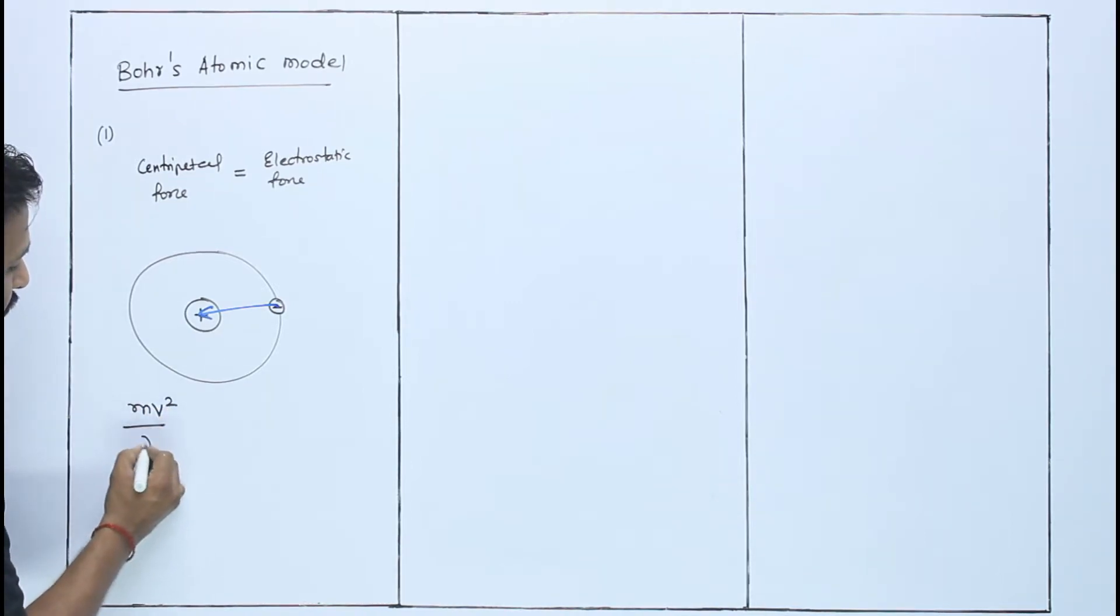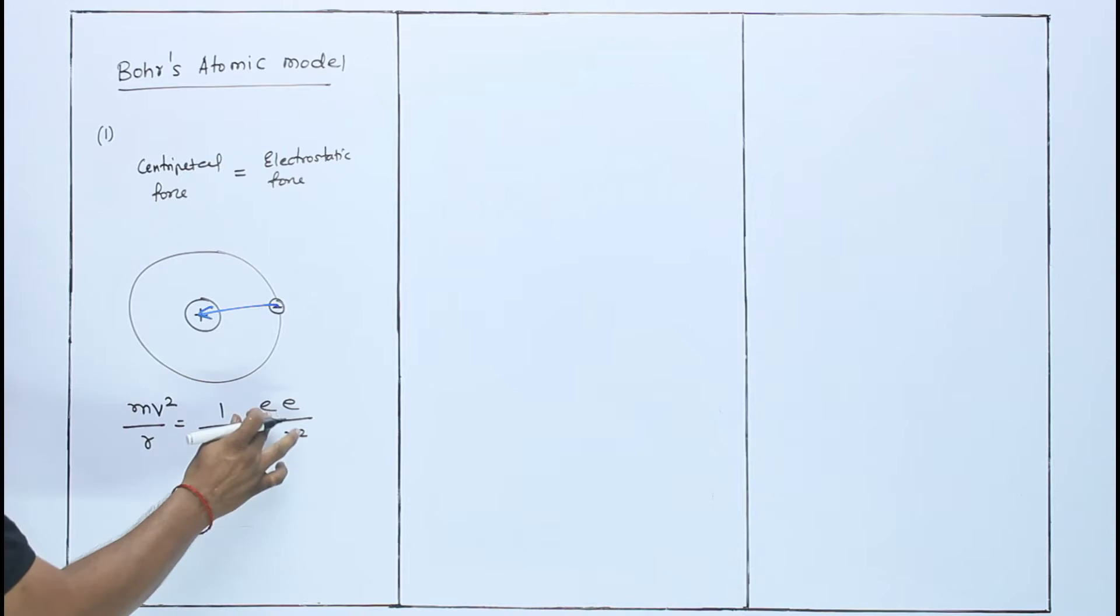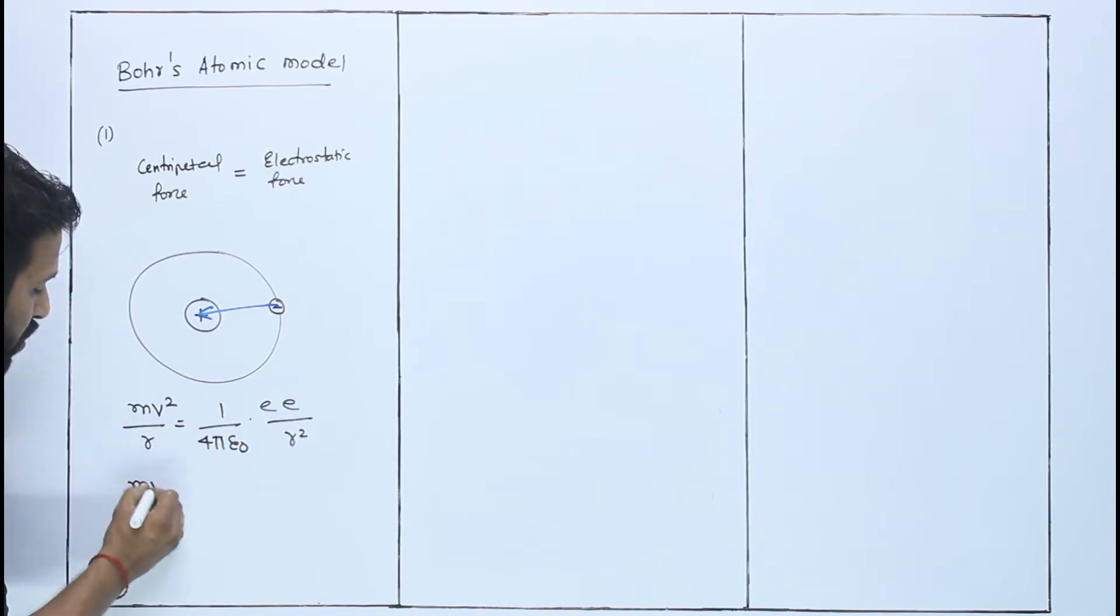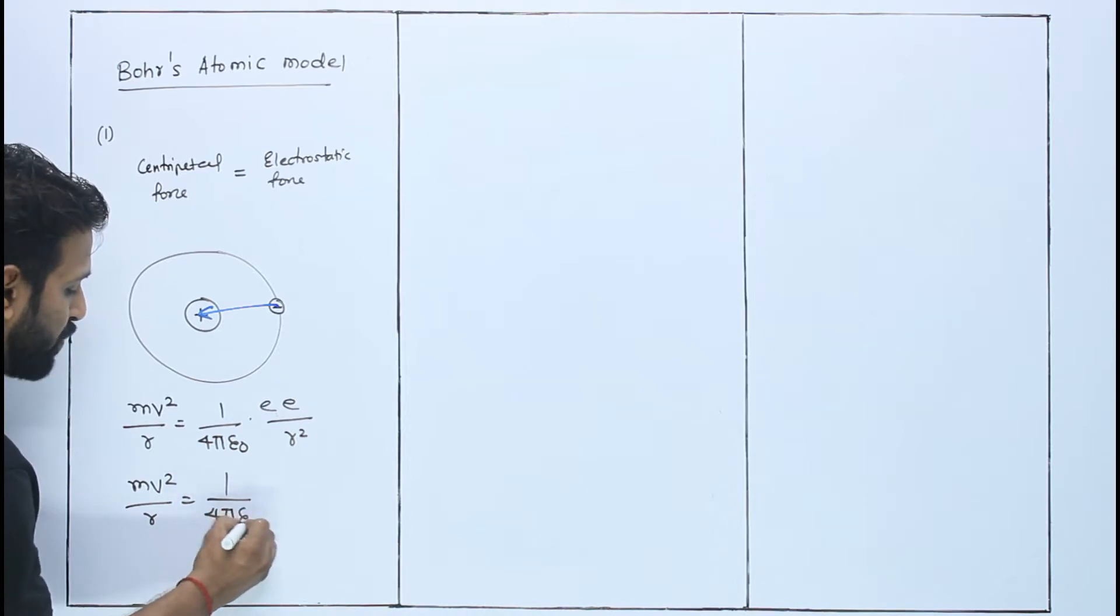The formula: mv² / r equals the electronic force formula 1 / 4πε₀ times e² / r². According to Coulomb's law, the charges are e and e, so e square. The formula is mv² / r = 1 / 4πε₀ × e² / r².